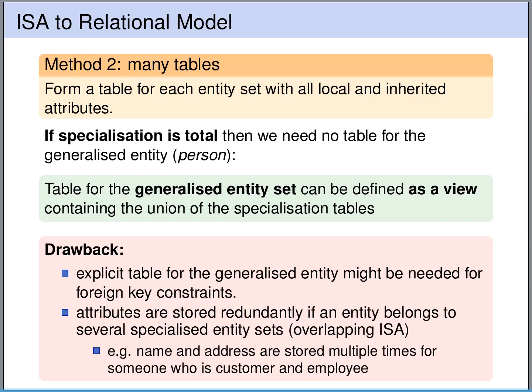Moreover, since we include all the inherited attributes in all the lower-level entity sets, we store data redundantly if we have entities that participate in more than one of the lower-level entity sets. So if we have a person that is both a customer and an employee at the same time, then we store the name redundantly — we store the name of this person twice.